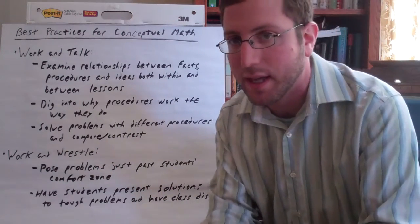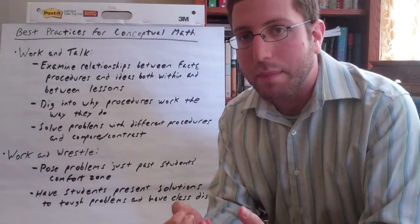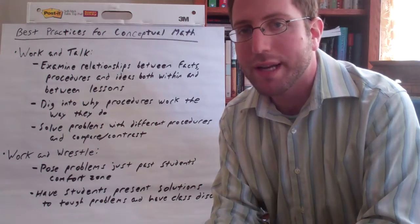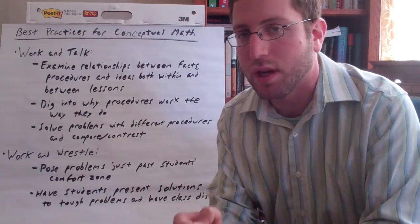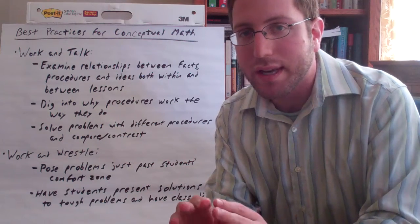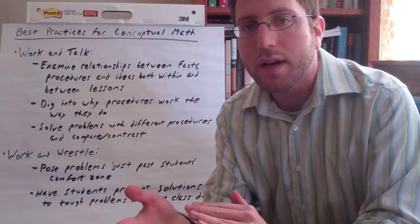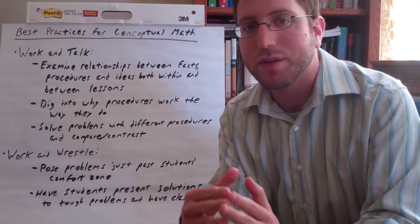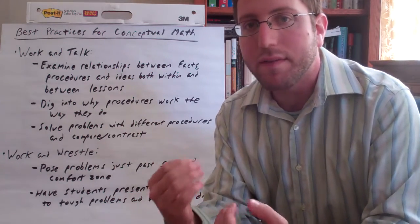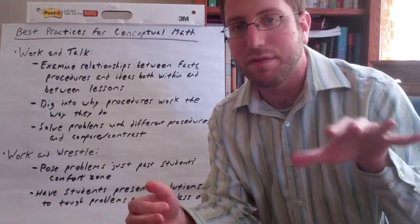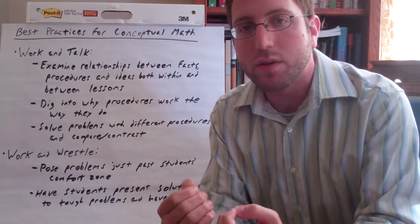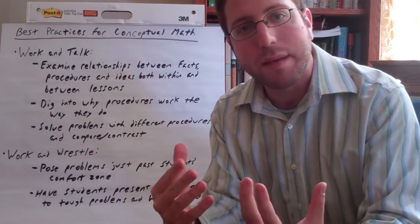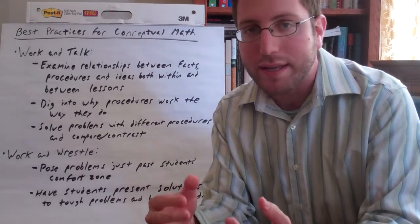The second overarching best practice is work and wrestle. This is the idea of giving students difficult problems and really helping them engage in meaningful ways to build their understanding. The first specific strategy is to pose problems just past students' comfort level — problems slightly harder than what they can already master. An example is taking something they've already mastered and putting a twist on it: instead of just doing division, maybe you add an extra digit or a zero in an odd place. You're extending what they know, giving students an opportunity to wrestle with how to apply and extend their mastered ideas into a new context, which forces much deeper engagement.